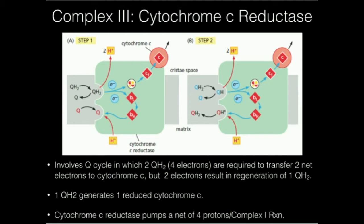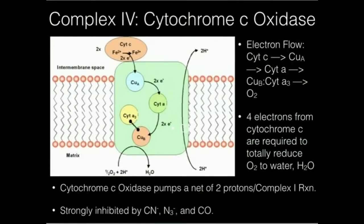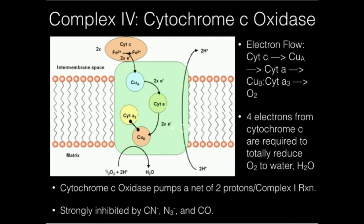The cytochrome c is soluble in the inner membrane space, so it's going to dissociate and flow over to this enzyme, and you see cytochrome c right here, and it delivers those electrons to cytochrome c oxidase.